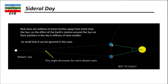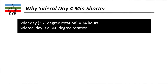Now let's look at the sidereal day. Here is Earth, and this is the Sun, showing the current position and the position after one sidereal period. If you observe a distant star — not the Sun — and after exactly 23 hours 56 minutes and 4 seconds, that star will return to the same position in the sky. That is the sidereal day, measured relative to a distant star rather than the Sun.